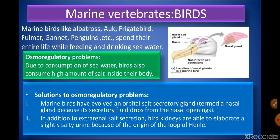Marine birds such as albatrosses and penguins spend their entire lives feeding and drinking sea water, ingesting high amounts of salt. To solve this, marine birds have evolved an orbital salt secretory gland, also known as the nasal gland, whose secretory fluid drips from the nasal opening to remove excess salt. In addition to this extra-renal salt secretion, bird kidneys can produce a slightly salty urine because of the presence of the loop of Henle.